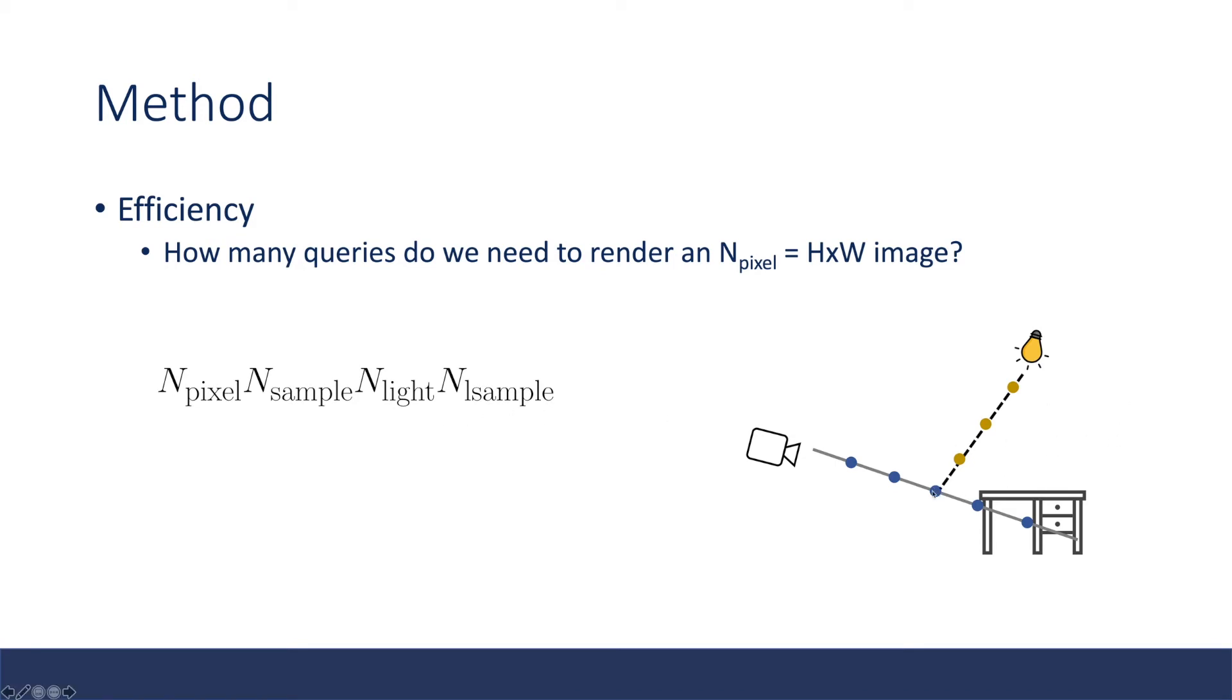To compute the visibility of the light source, we also need to shoot a ray to the light. So basically, we also need to time the number of lights (here is one point light), and we need to time the number of samples along this ray. And this is just prohibitive, right?